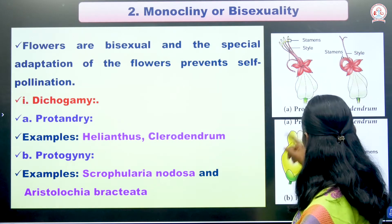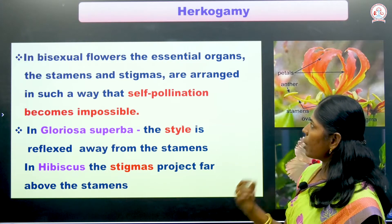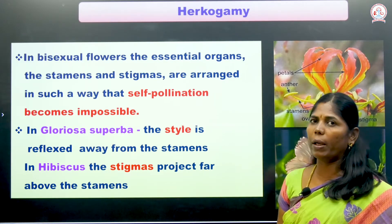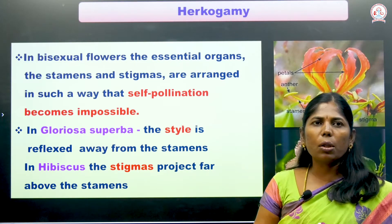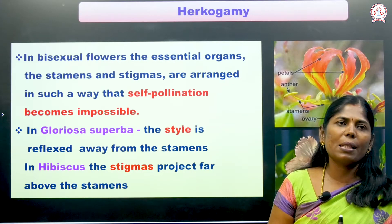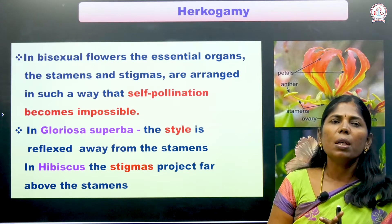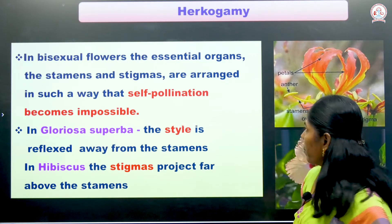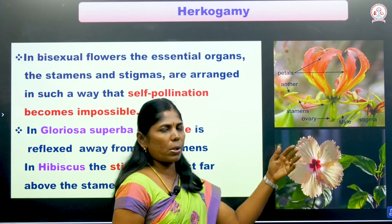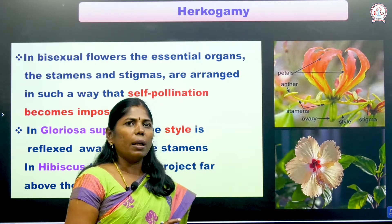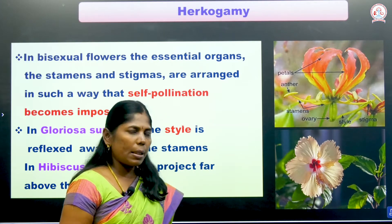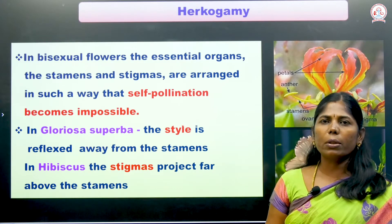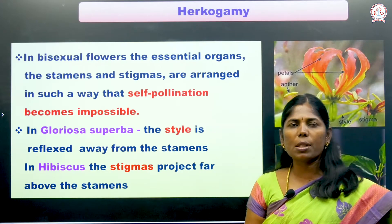Hercogamy: in bisexual flowers, the stamen and stigma are arranged in such a way that prevents self-pollination. Example: Gloriosa superba — the state flower of Tamil Nadu — the style is reflexed away from the stamens, placing male and female sex organs at different ends, making self-pollination impossible. In Hibiscus, the stigma is positioned away from the stamens, so only cross pollination can occur.